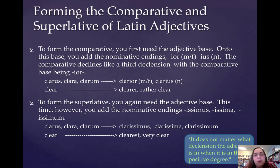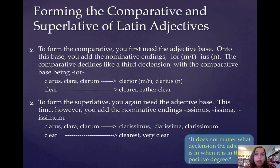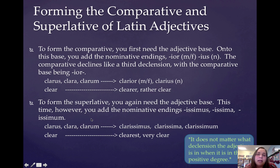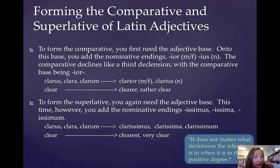To form the superlative, you again need the adjective base, and you add -issimus, -issima, -issimum to it, and then you decline it like a first/second declension adjective. It doesn't matter what declension the adjective is in the positive degree. For example, the word for brave, fortis, forte, when you make it superlative, it's still going to be fortissimus, fortissima, fortissimum, and it declines like a first/second declension adjective. For clarus, the base is clar, and it becomes clarissimus, clarissima, clarissimum — so clearest, very clear, extremely clear.